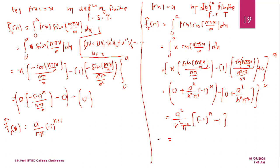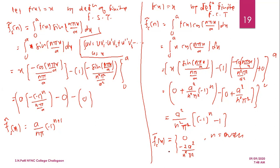For further simplification: when n is even, (−1)^n = 1 so the bracket gives zero. When n is odd, (−1)^n = −1 so the result is −2a²/(n²π²). This completes the simplification. Thank you.